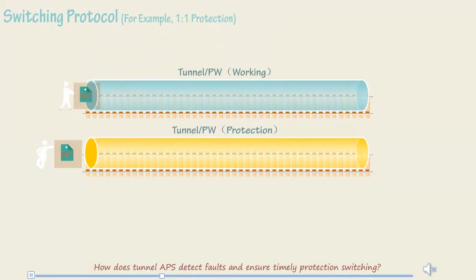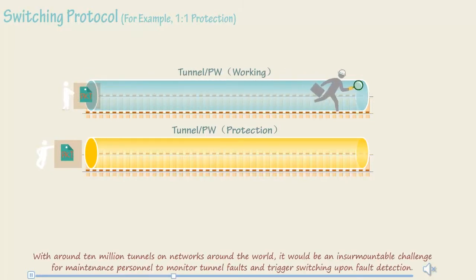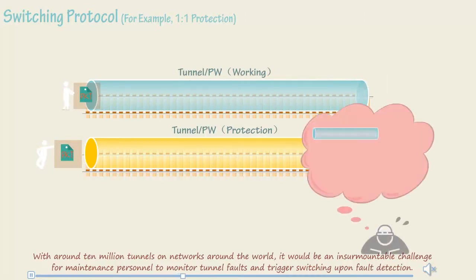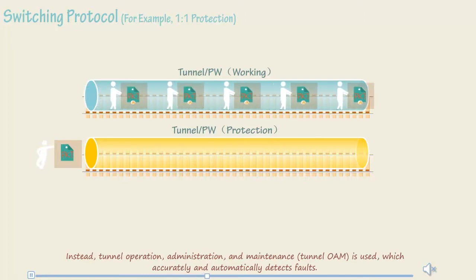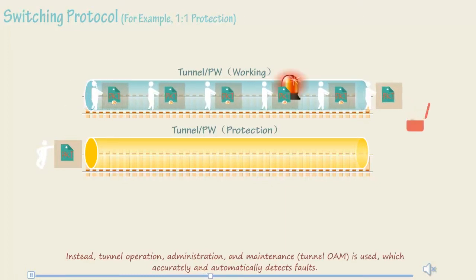How does tunnel APS detect faults and ensure timely protection switching? With around 10 million tunnels on networks around the world, it would be an insurmountable challenge for maintenance personnel to monitor tunnel faults and trigger switching upon fault detection. Instead, tunnel operation, administration, and maintenance tunnel OAM is used, which accurately and automatically detects faults.